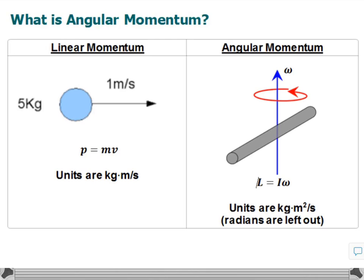The units for angular momentum are the units of rotational inertia, which are kilograms meters squared. So we have kilograms meters squared, times the units for angular speed, which are radians per second. But the radians we leave out because, in a sense, they are what we call in physics a placeholder unit. So when things get too crowded with all the units, we actually drop the radians. The units for angular momentum are kilograms meters squared per second.